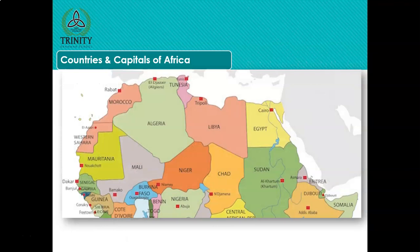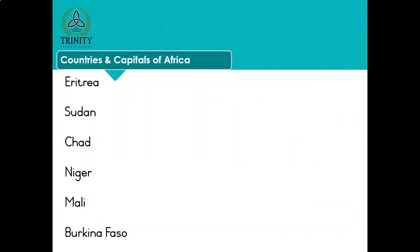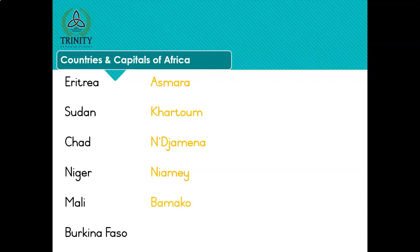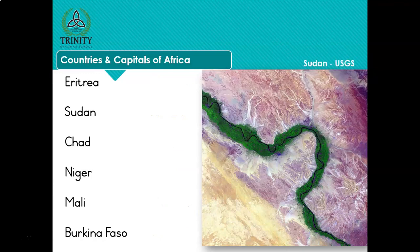Now we're going to move on to the northern part of Africa - these are newer ones we've been learning during lockdown. Eritrea - Asmara. Sudan - Khartoum. Chad - N'Djamena. Niger - Niamey. Mali - Bamako. Burkina Faso - Ouagadougou - remember that one? And there is an aerial photograph of the Nile flowing through Sudan.